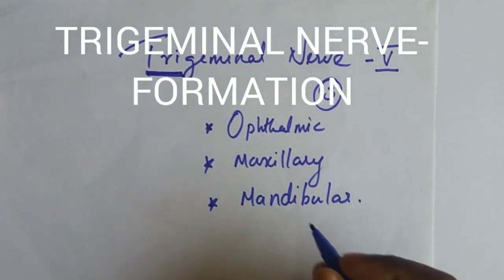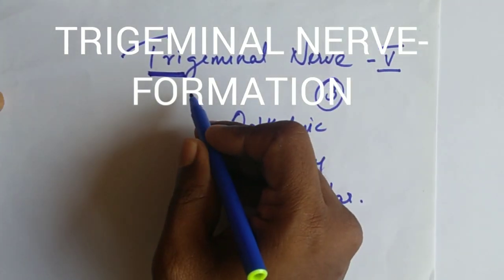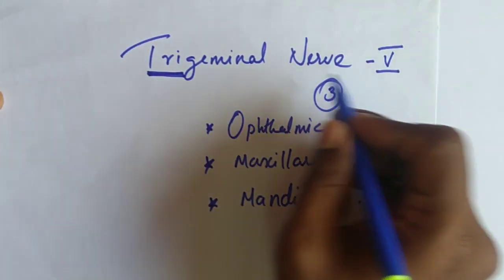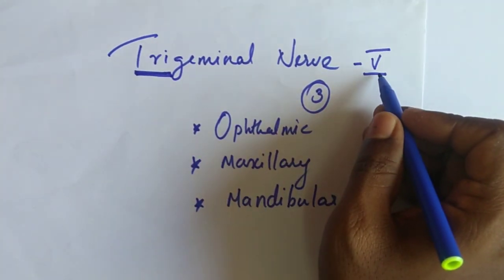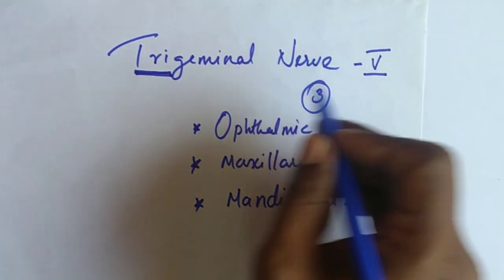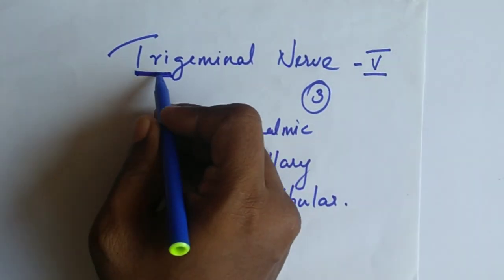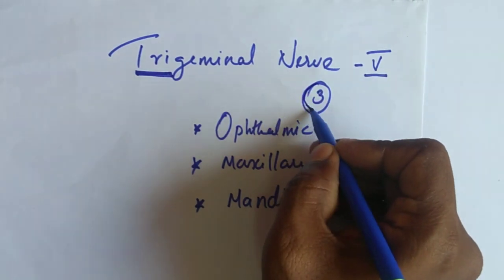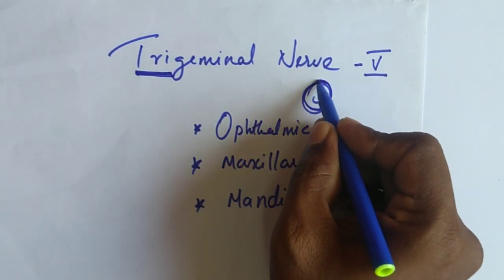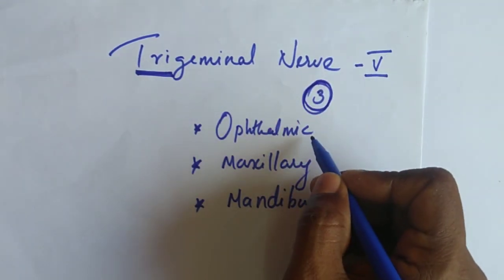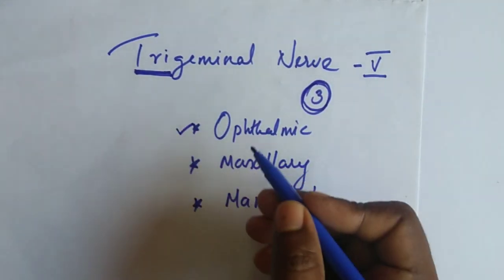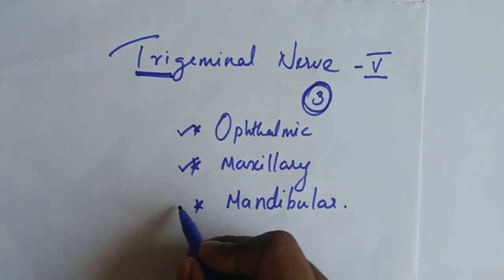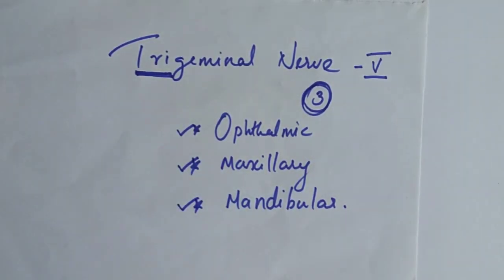Good morning. In today's class, let's study about the trigeminal nerve. The trigeminal nerve is the fifth cranial nerve. 'Tri' means three, so the trigeminal nerve has got three divisions: the first one is ophthalmic, second one is maxillary, and third one is mandibular.